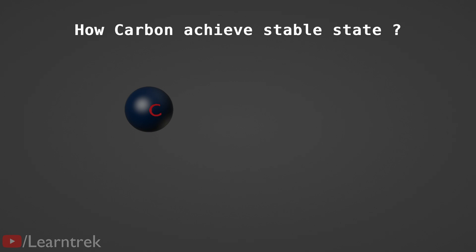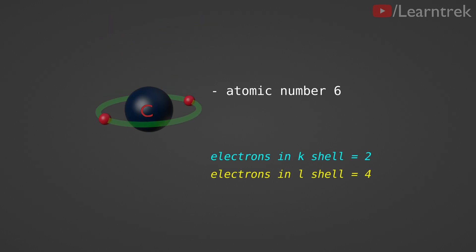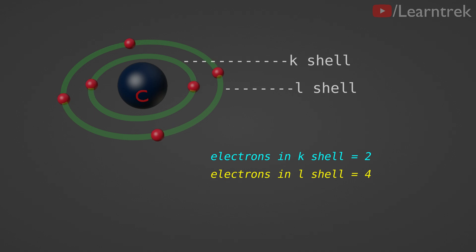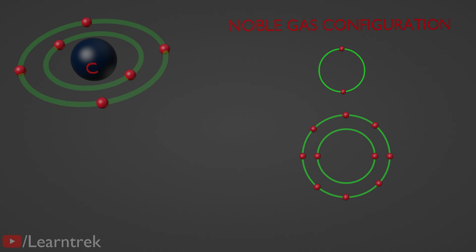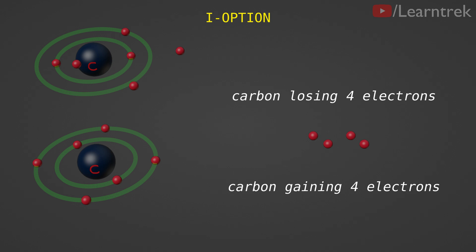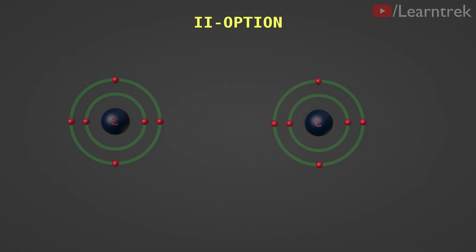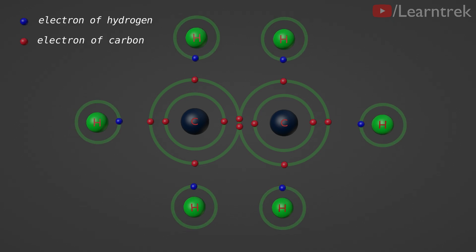Let's understand how carbon achieves stable state. The atomic number of carbon is 6. It has 2 electrons in its K shell and 4 electrons in its L shell. Carbon has two options to achieve noble gas configuration: the first option is to lose or gain 4 electrons, and the second option is to share its valence shell electrons with other atoms of carbon or with atoms of other elements.